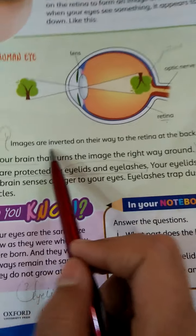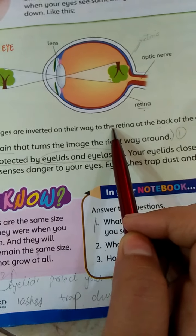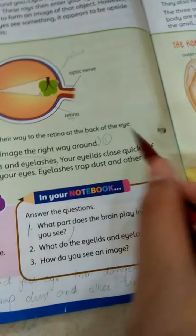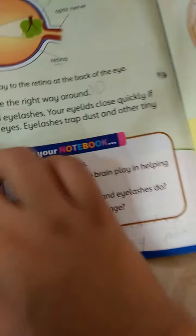Images are inverted on their way to the retina at the back of the eyes. The image is made in the back.